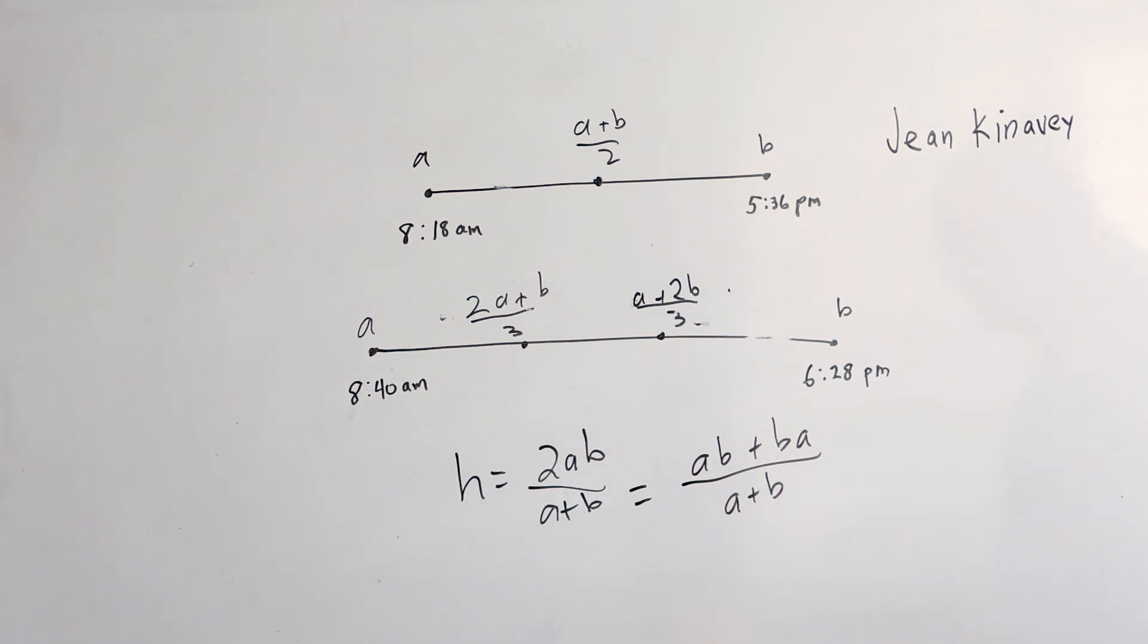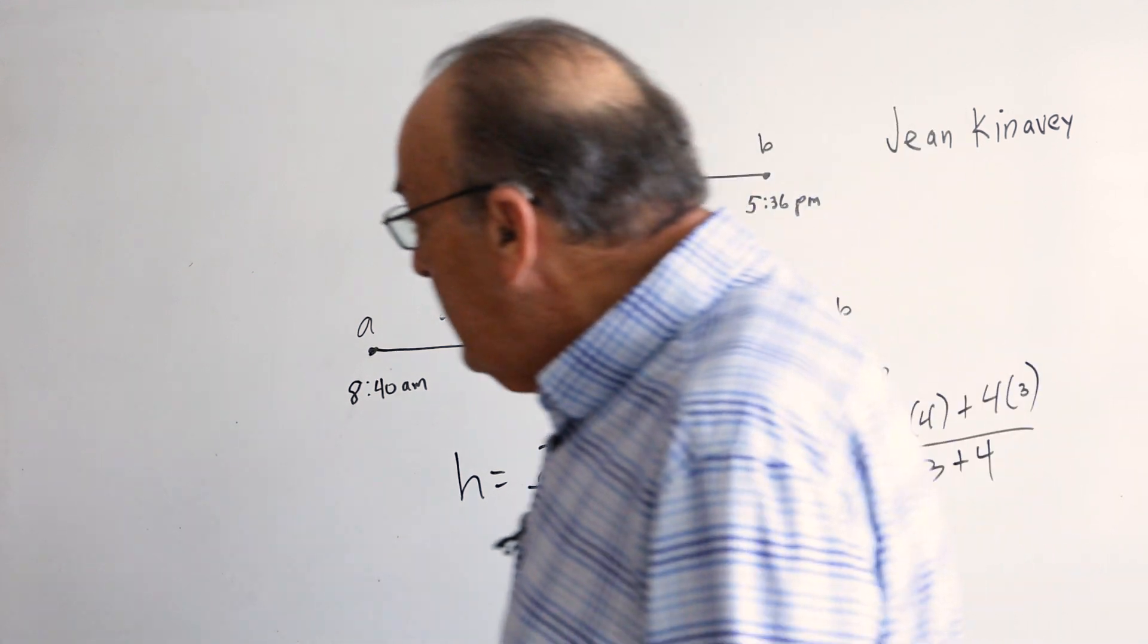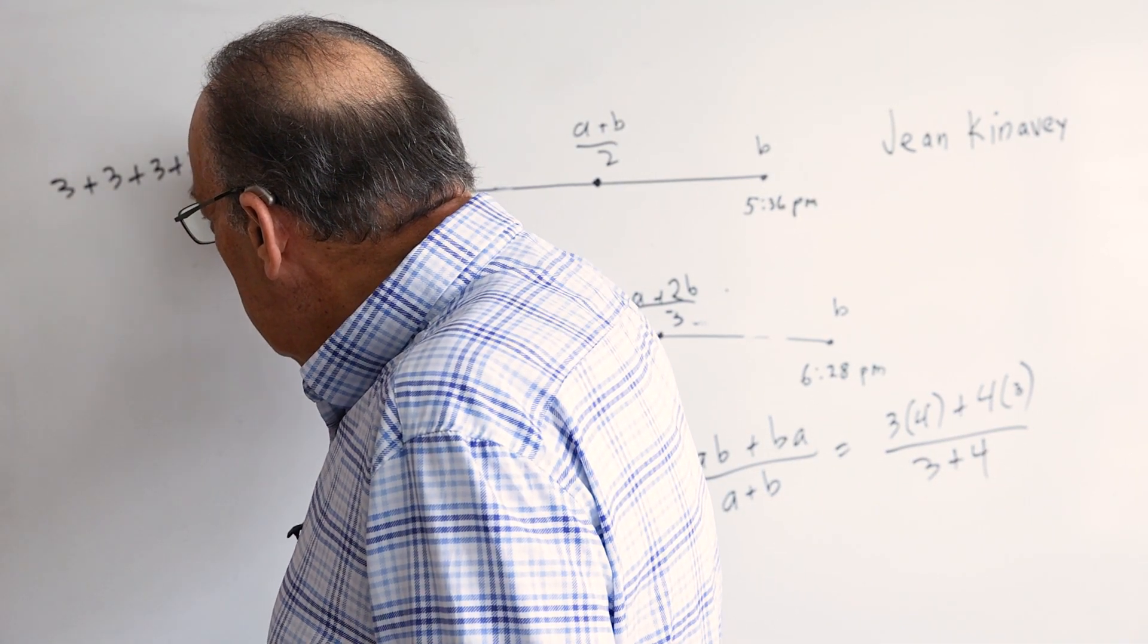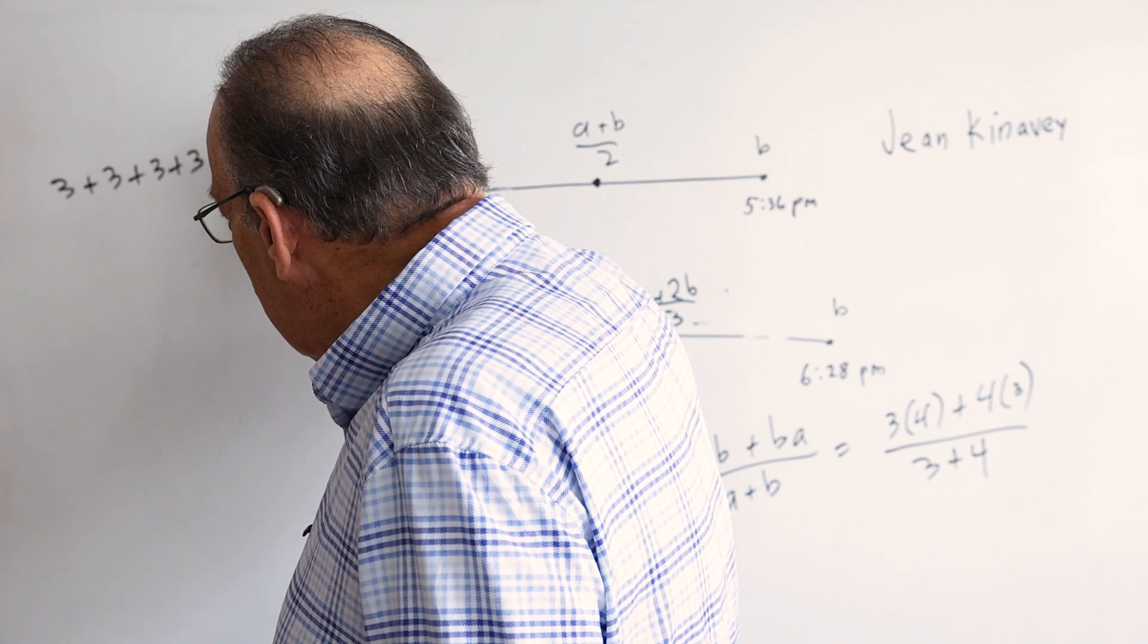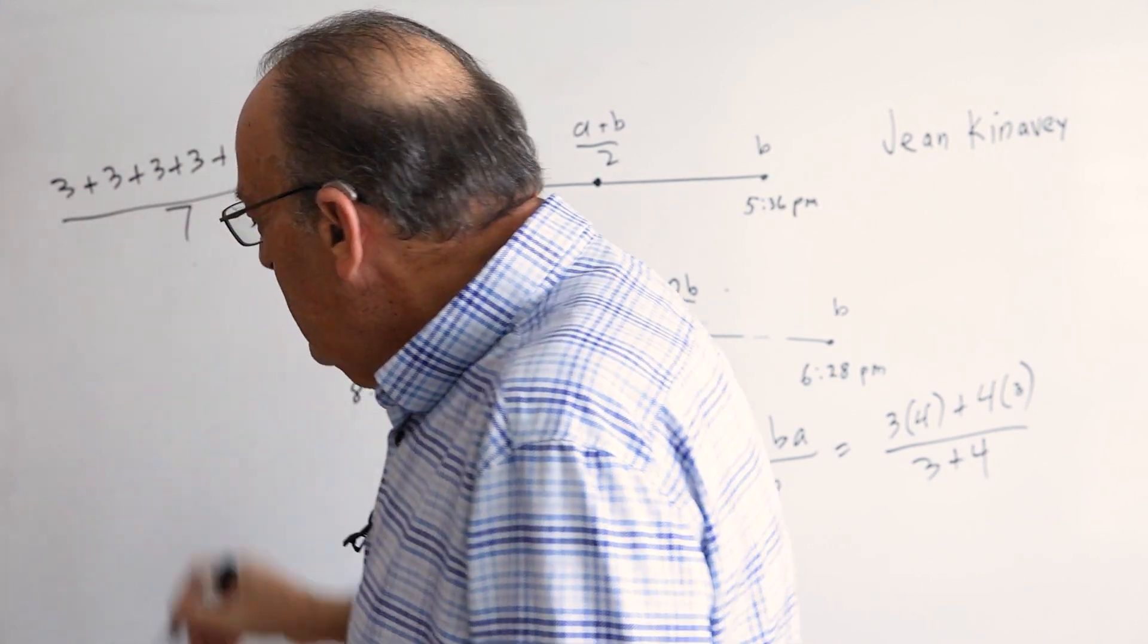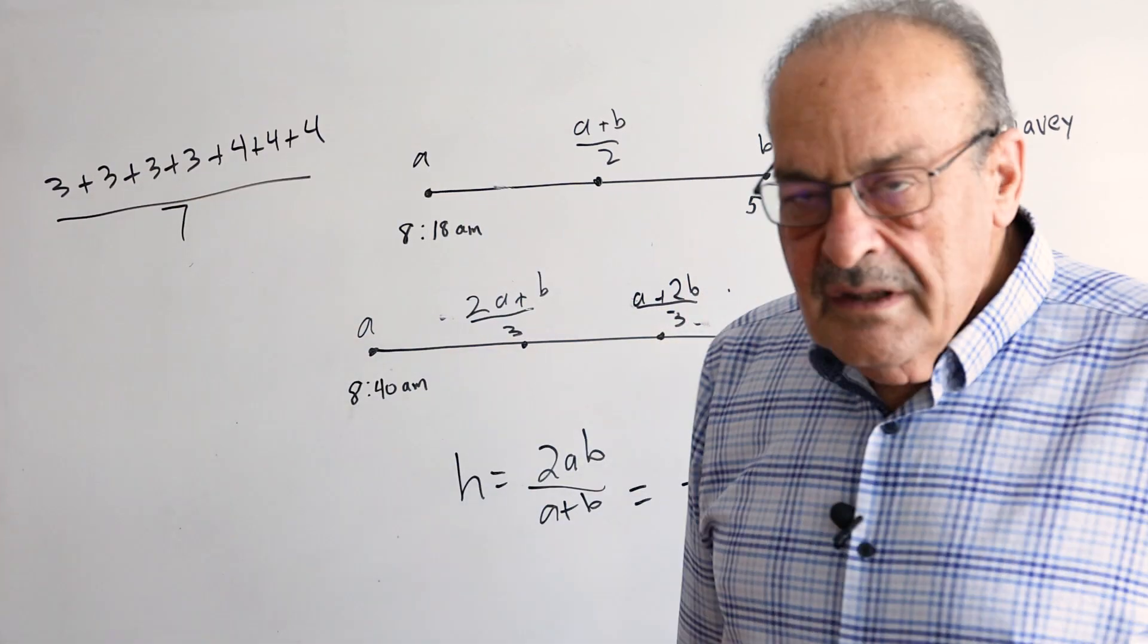So let's look at 3 and 4. This is equal to 3 fours plus 4 threes divided by 3 plus 4. This would be a formula for finding the harmonic mean of 3 and 4. Another way to write it would be like this: because you have 4 threes plus 3 fours over 7. So this would be the harmonic mean of 3 and 4.